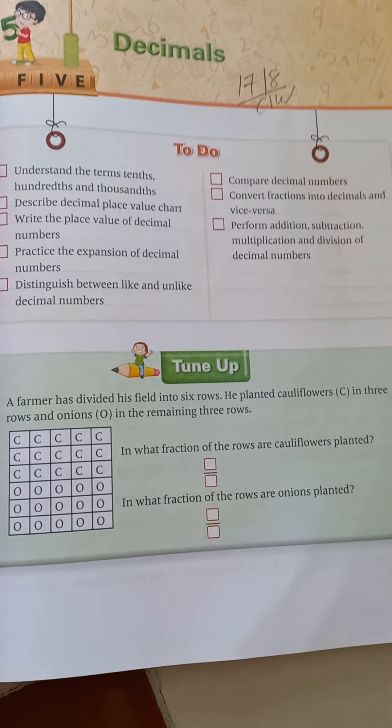Before we learn decimals in detail, let's do a tune-up exercise. A farmer has divided his field into 6 rows. He planted cauliflower (written as C) in 3 rows and onion (written as O) in the remaining 3 rows. You have to write in what fraction of the rows cauliflowers are planted.